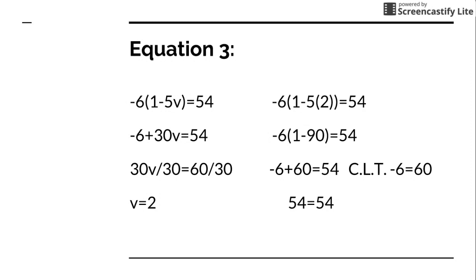Now double check. Negative 5 times negative 2 is 10. Negative 6 times 1 is gonna be negative 6. Negative 6 times negative 10 is gonna be positive 60. Now I add negative 6 plus the big old 60, that equals 54. So I know the answer is right.